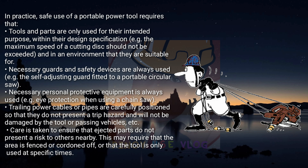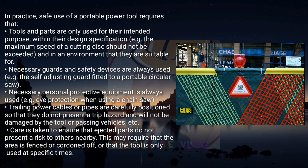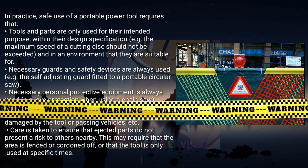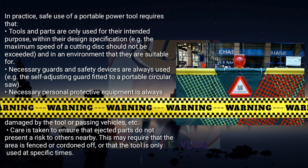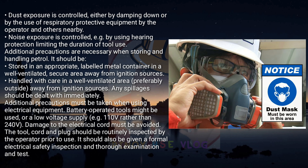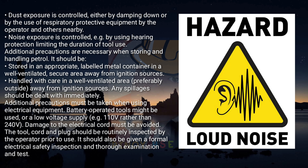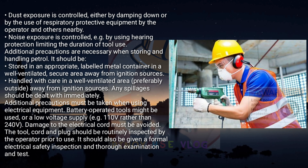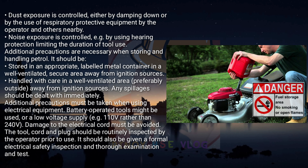Care must be taken to ensure that ejected parts do not present a risk to others nearby; this may require that the area is fenced or cordoned off, or that the tool is only used at specific times. Dust exposure should be controlled either by damping down or by the use of respiratory protective equipment by the operator and others nearby. Noise exposure should be controlled, for example by using hearing protection or limiting the duration of tool use.